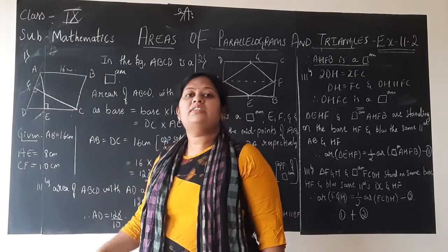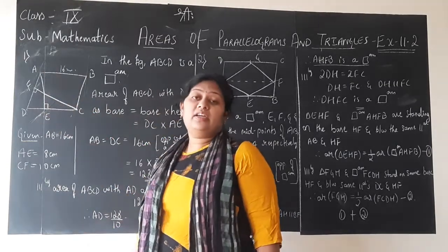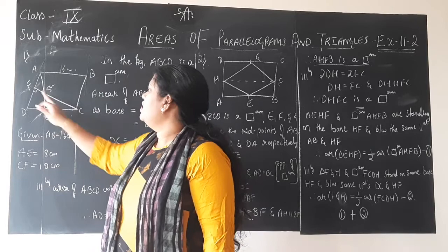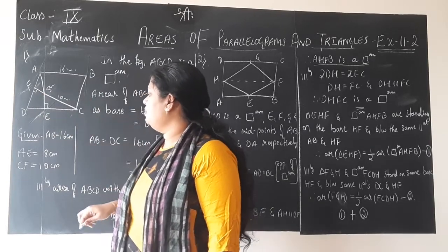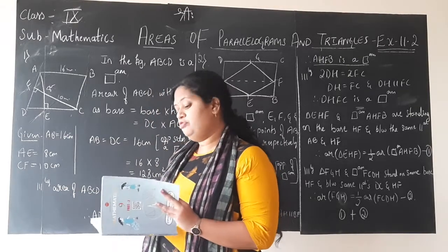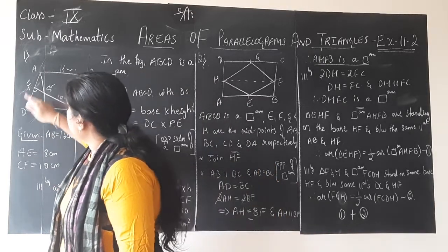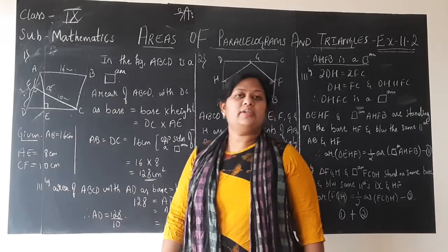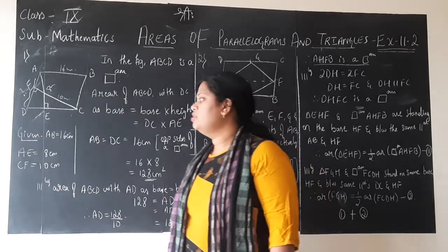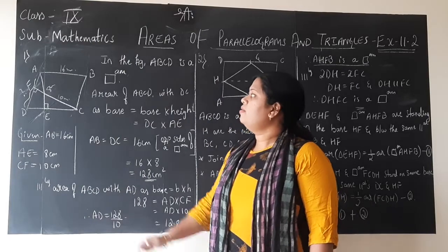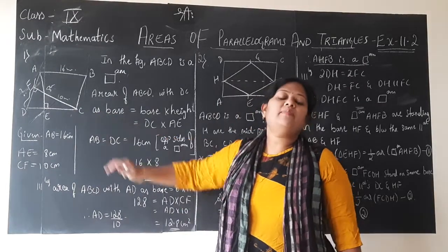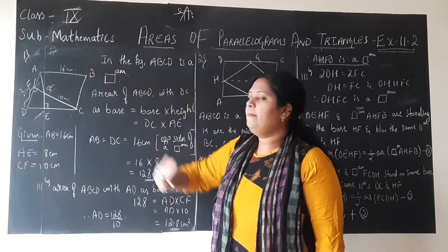AE is considered as the height since it is the perpendicular drawn, so height AE is 8 cm. Similarly, perpendicular CF is 10 cm. All three measurements are given. The question asks us to find the measurement of side AD. The problems are very simple if you have understood the theorem and the concepts discussed earlier. Let us write the given data and describe the figure: ABCD is a parallelogram.